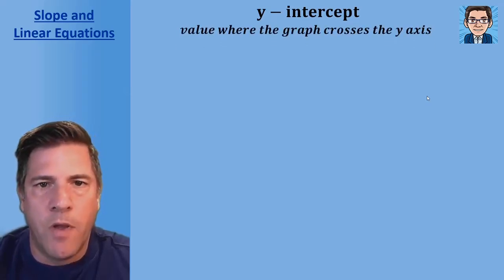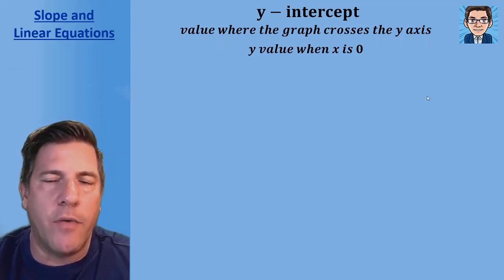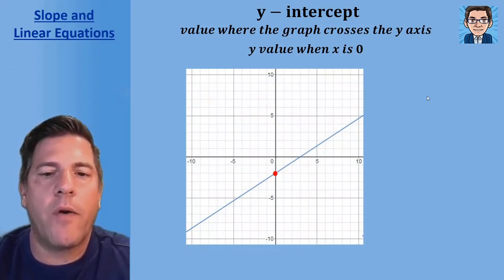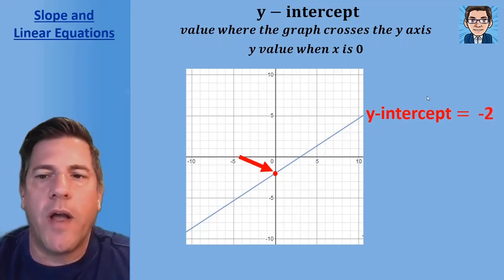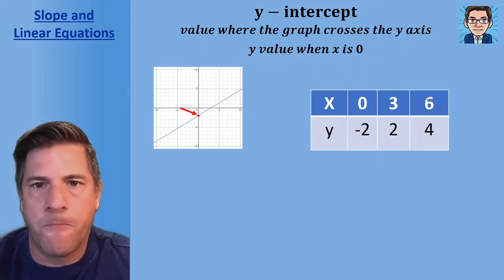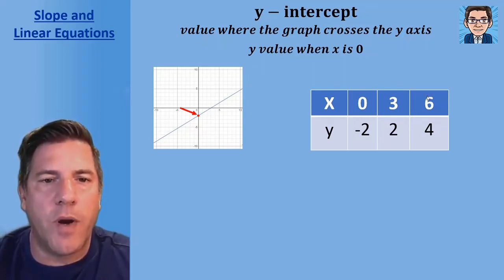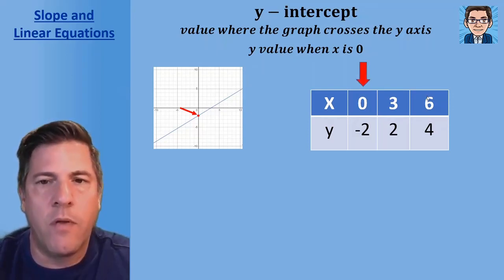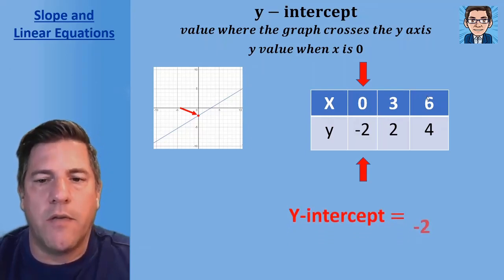Now let's look at the y-intercept. On a graph, the y-intercept is where the graph crosses the y-axis, and it's also the y value when x equals zero. Looking at our graph, the point where it crosses the y-axis has a y value of negative two, so the y-intercept is negative two. In a table of values, find the row where x equals zero — the corresponding y value is the y-intercept, which here is also negative two.